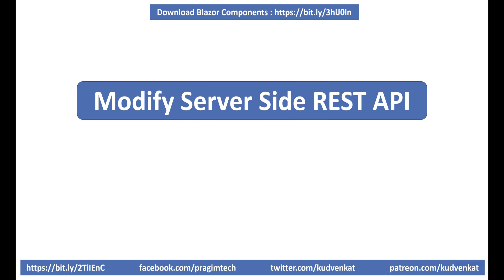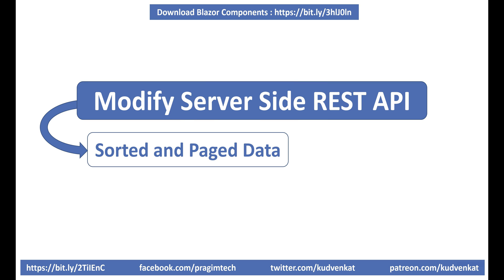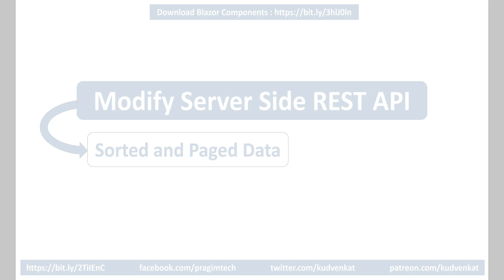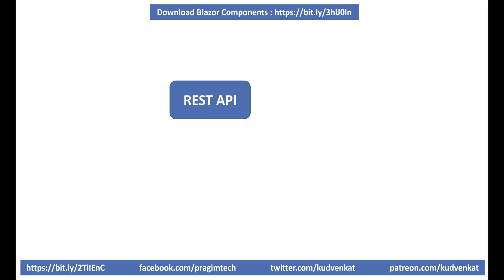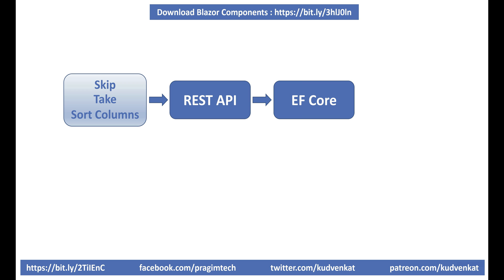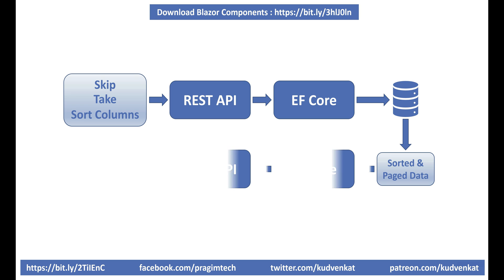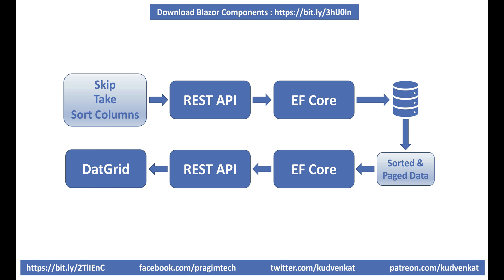Our first step is to modify the server-side REST API to provide sorted and paged data. For the REST API to do that, we need to provide it with three things: the number of rows to skip, the number of rows to take, and the columns by which we want the data sorted. The REST API will forward those three parameters to Entity Framework Core, which will forward them to the database engine. The database engine will perform sorting and paging and return the sorted and paged data to the REST API, which will return it to the data grid for display.